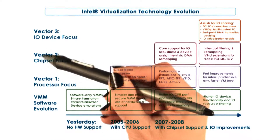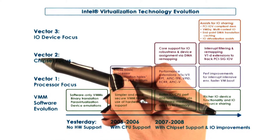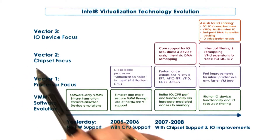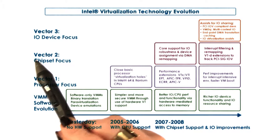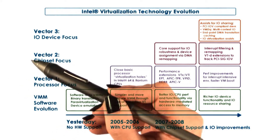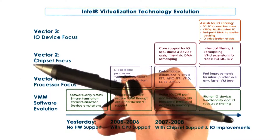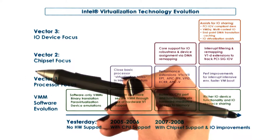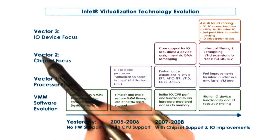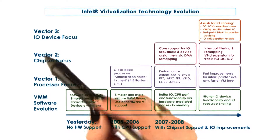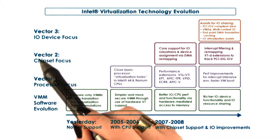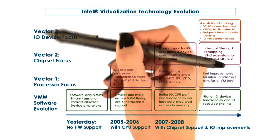Vector 2 refers to modifications pertaining to the entire chipset, such as chipset-side support for technologies like SRIOV — technologies that help with IO virtualization — or for IO routing and mechanisms for direct device access.